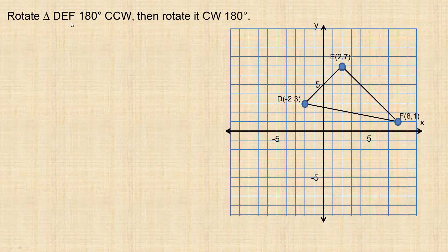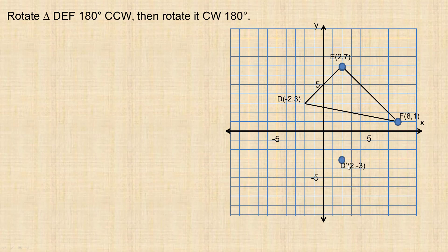Now we're going to rotate triangle DEF 180 degrees counterclockwise. I'll discuss why clockwise versus counterclockwise doesn't matter in a moment. Starting with point D, I'll draw the circle again with D's distance from the origin as the radius. Point D is 2 to the left of the origin and 3 up, so D's image will be 2 to the right and 3 down — that's the 180 degree counterclockwise rotation. So that's D prime.